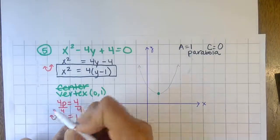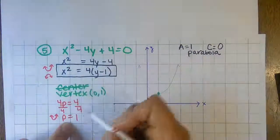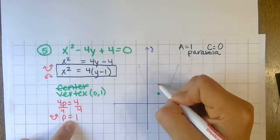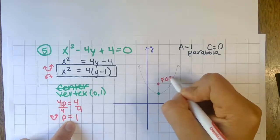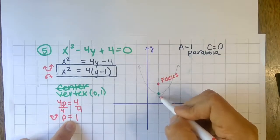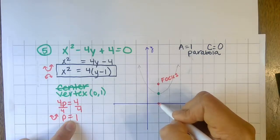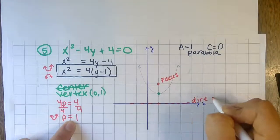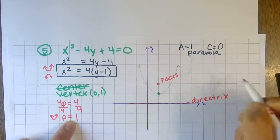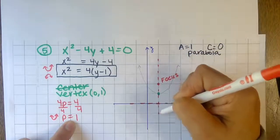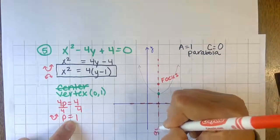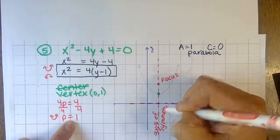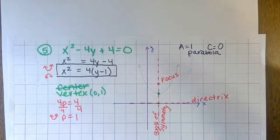The p value of one unit gives the coordinates for your focus point, which is one unit inside the parabola from the vertex. The same distance outside gives the equation for the directrix, and your axis of symmetry equation comes from that as well. That's all you need to know for now.